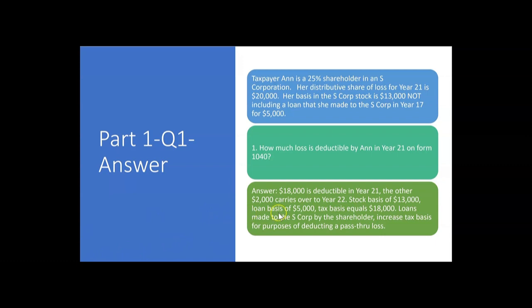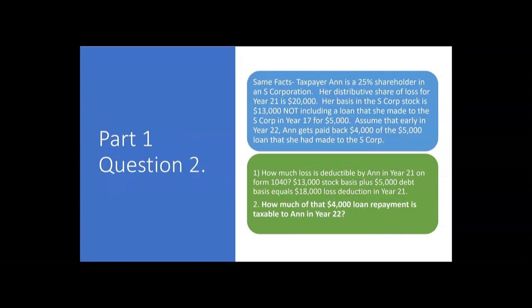So we had a $20,000 pass-through loss. We wanted to know how much of that loss Ann could deduct in year 21. We always use stock basis first, $13,000, and then we use loan basis to give her the maximum loss deduction of $18,000. And notice when we do that, she has no basis remaining. She has no stock basis remaining and no debt basis remaining. We used all the $13,000 of stock basis and then we used all $5,000 of loan basis. And you'll see why that's important when we get to this question.